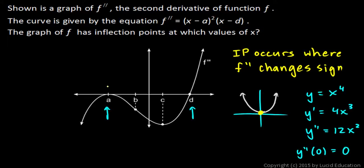Point A is a place where the second derivative is zero. You can see this is the second derivative, and it's zero right there, and you can see that in the equation as well. But at that point, there's no inflection point,